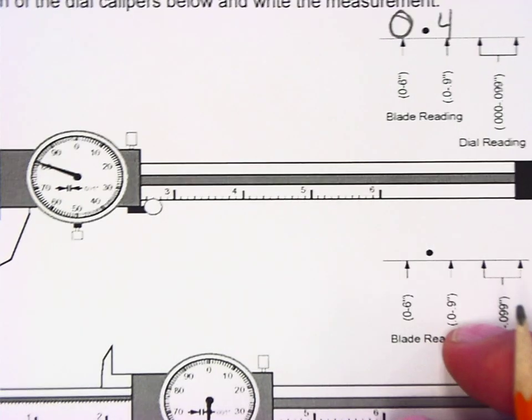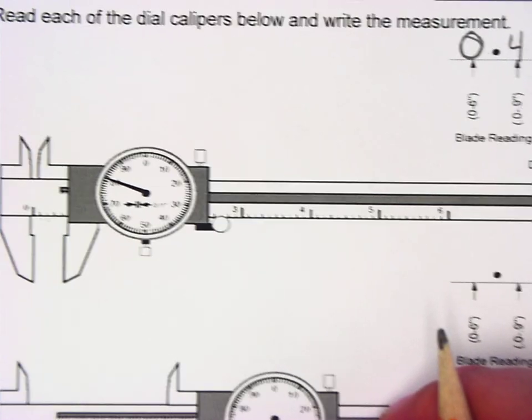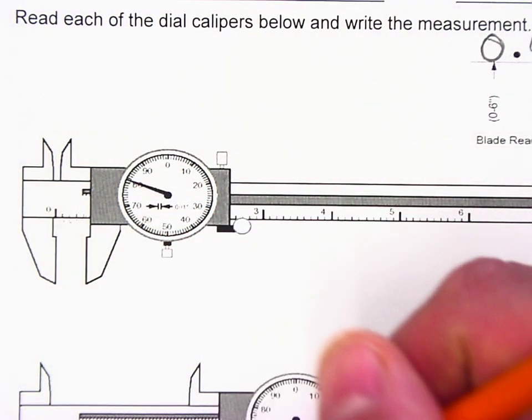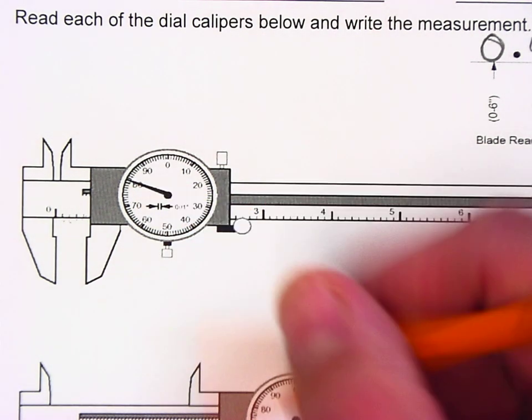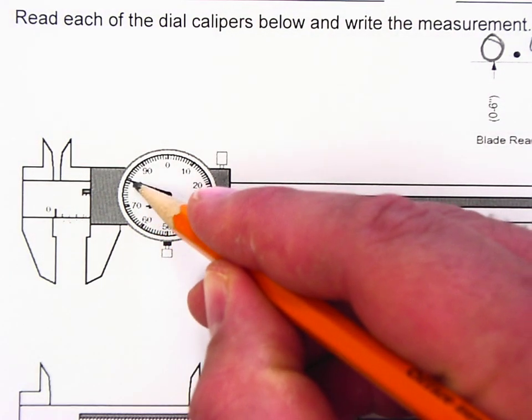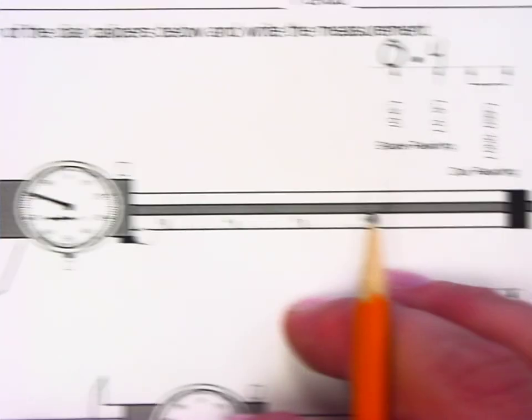The last step is to read the hundredths and thousandths from the dial. On a dial caliper, you come over here and you look to see where the needle is pointing on the dial. In this case, you can see here there's 60, 70, 80, and it's slightly passed. There's one passed, so we're going to write this down as 81.